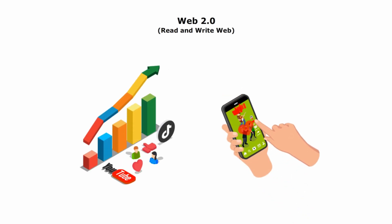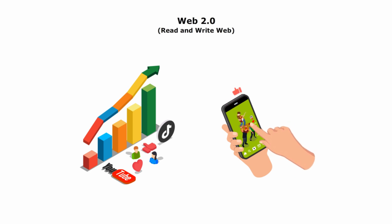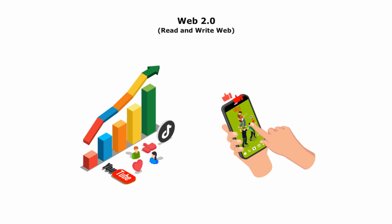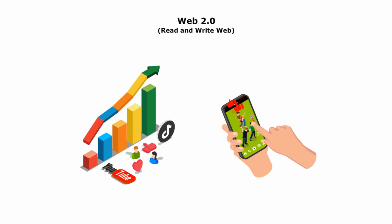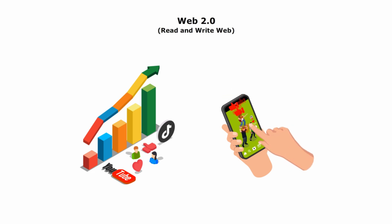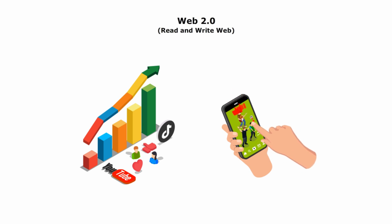If Web 1.0 is top-down, where information is created and distributed by a few websites, Web 2.0 is bottom-up, where users can participate in making and disseminating information and influence content's popularity and relevance.